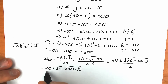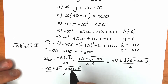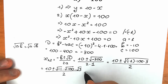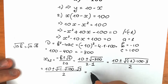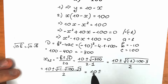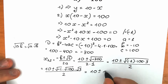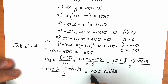Square root of minus 1 is the complex unit i, because in real numbers there is no way to find the square root of a negative number. So we have 10 plus or minus i times 10 times square root of 3, all over 2.